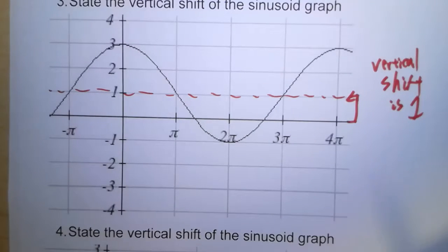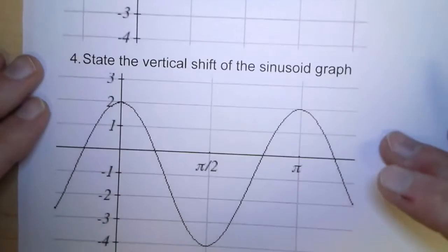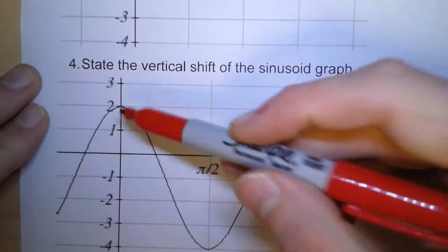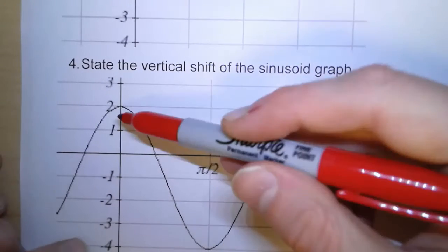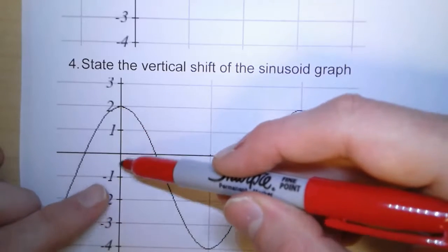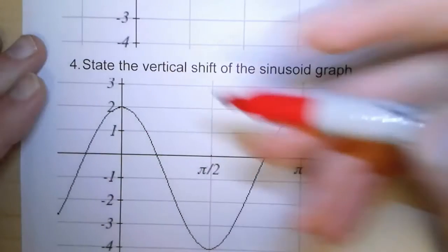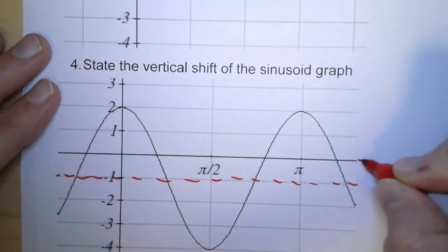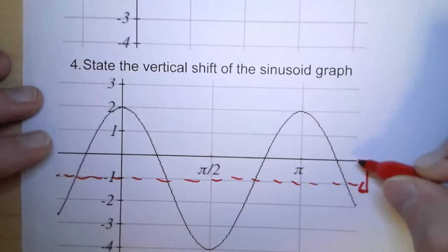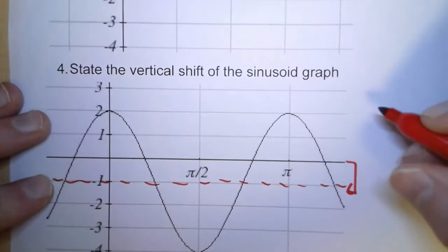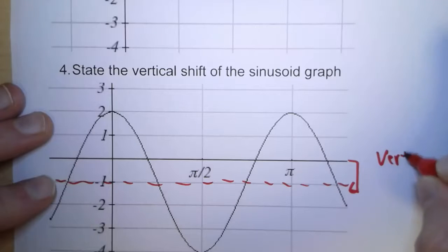Now for the fourth one, we do the same thing. Here we've got a high point of 2 and a low point of negative 4. So what number is halfway between them? Well, let's just count. Move one space in, one space in, one space in, and once we meet, there's the middle. So normally, this graph would be centered on the x-axis, but it got moved down one space. So our vertical shift, in this case, is negative 1.